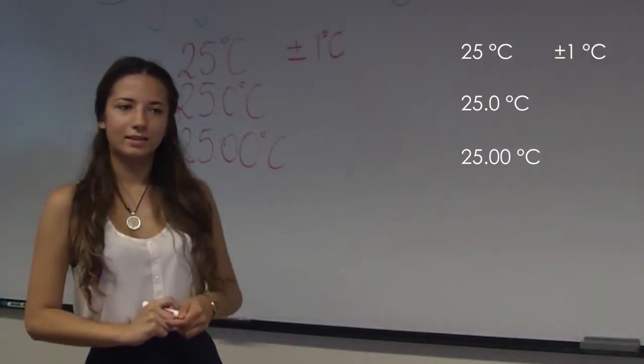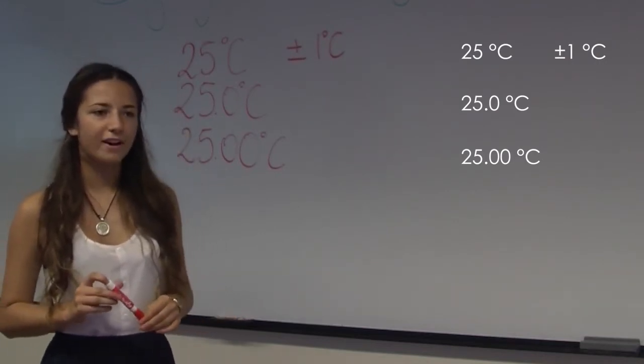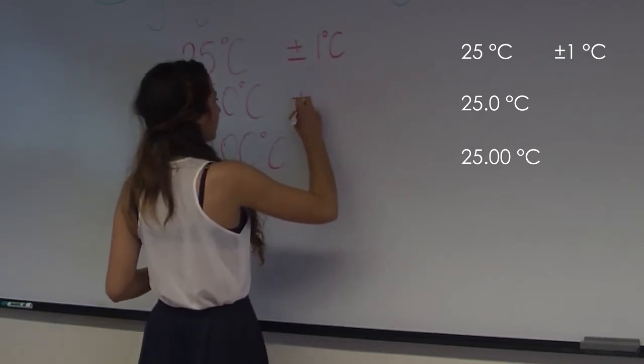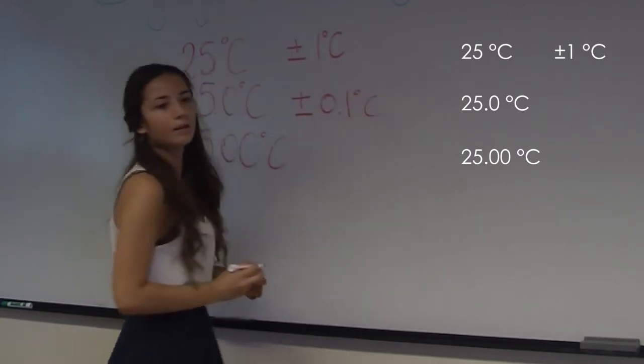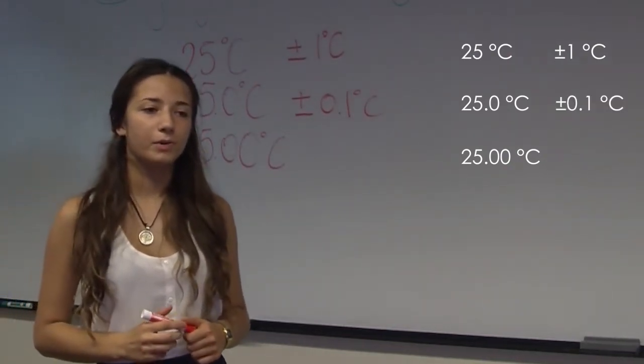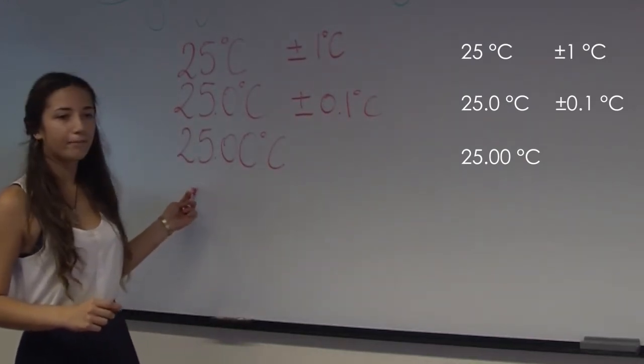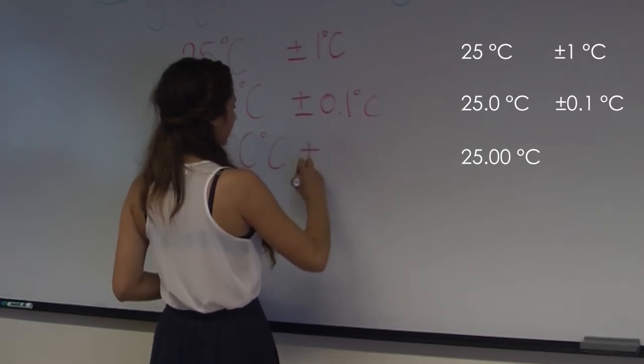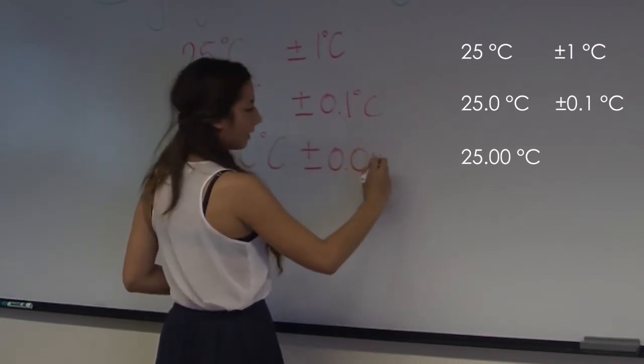The second one implies that the temperature is definitely between 24.9 and 25.1 degrees, so that's an uncertainty of plus or minus 0.1 degrees. Finally, the third one implies that the temperature is definitely between 24.99 and 25.01 degrees, so that's an uncertainty of plus or minus 0.01 degrees.